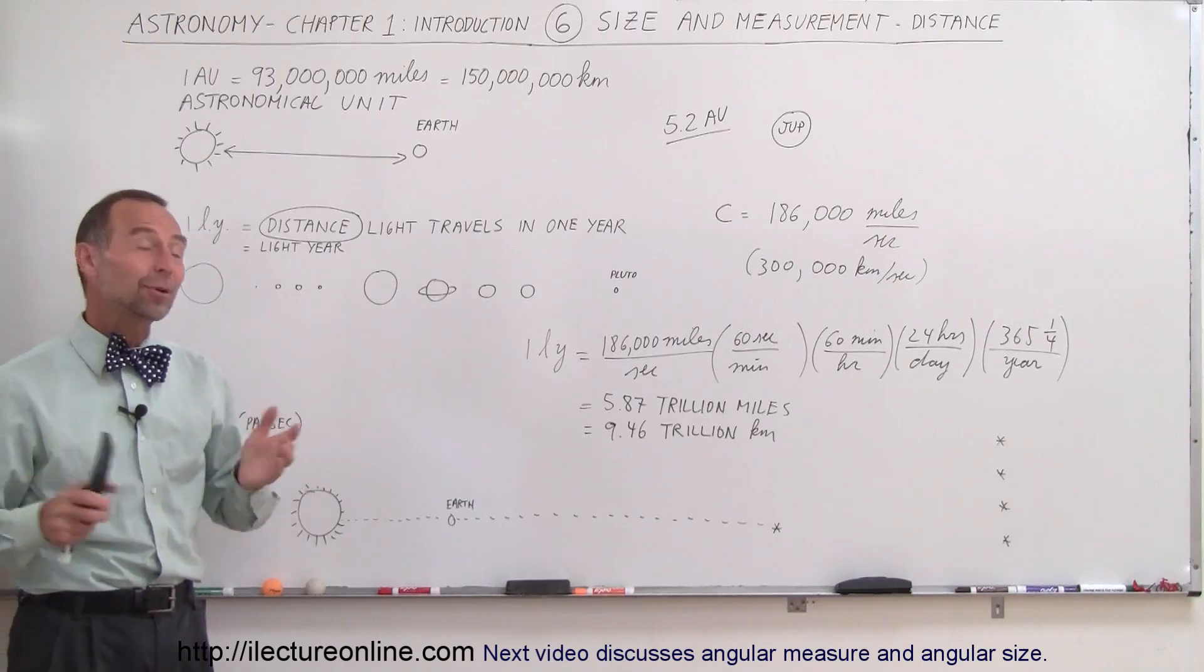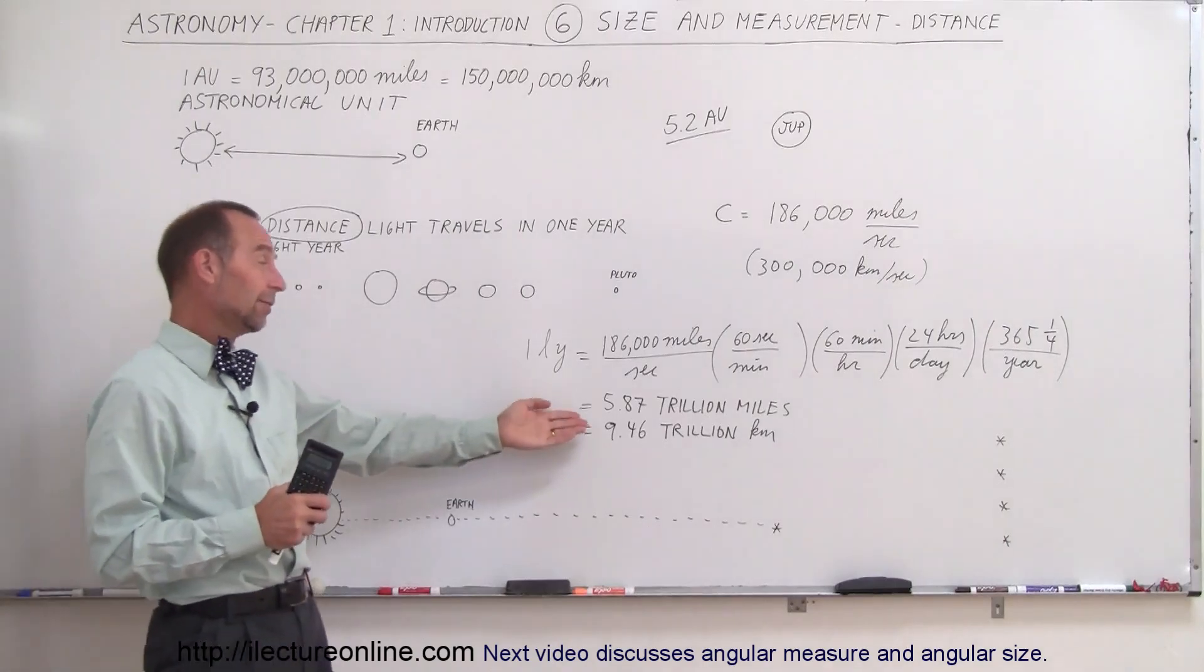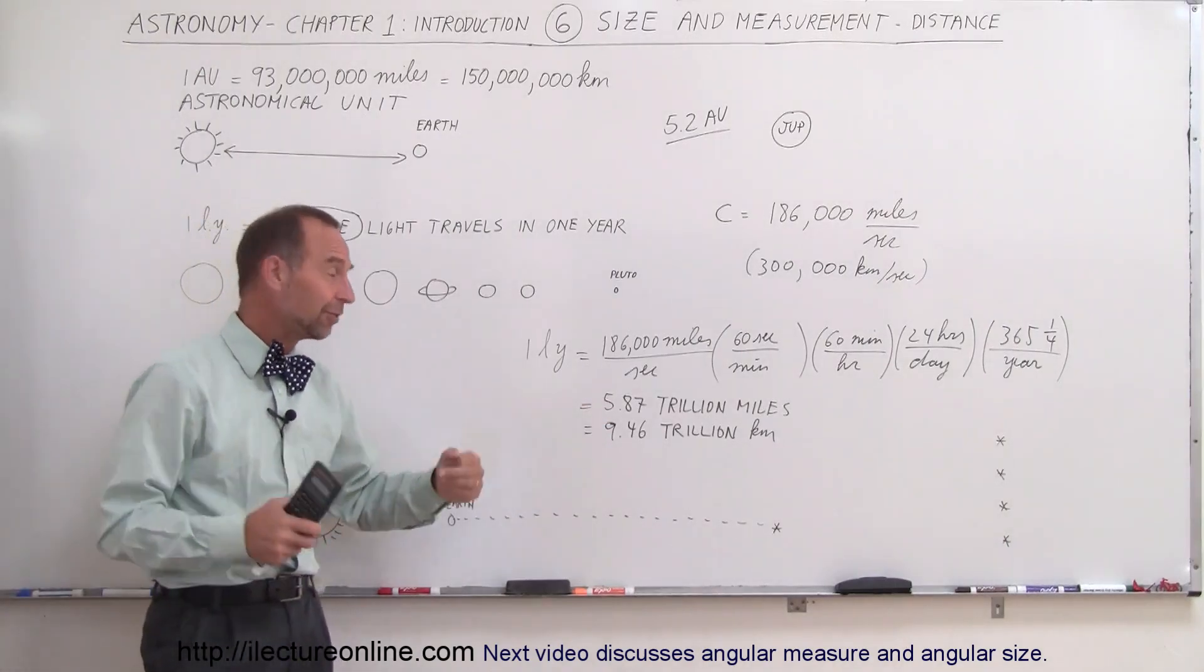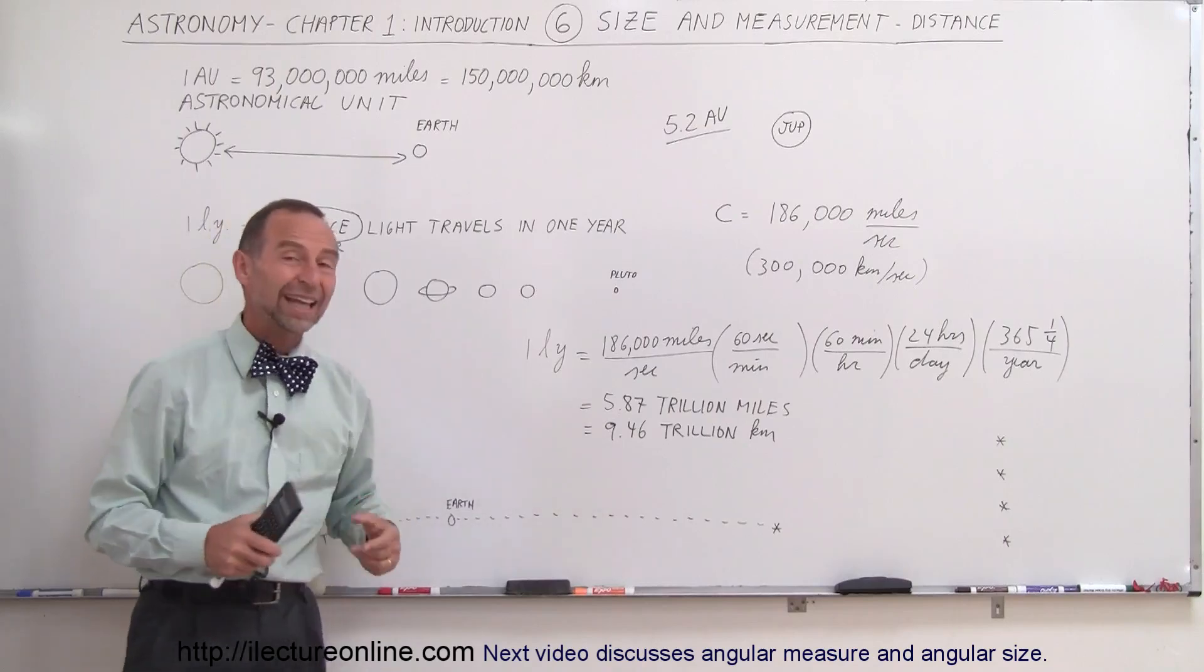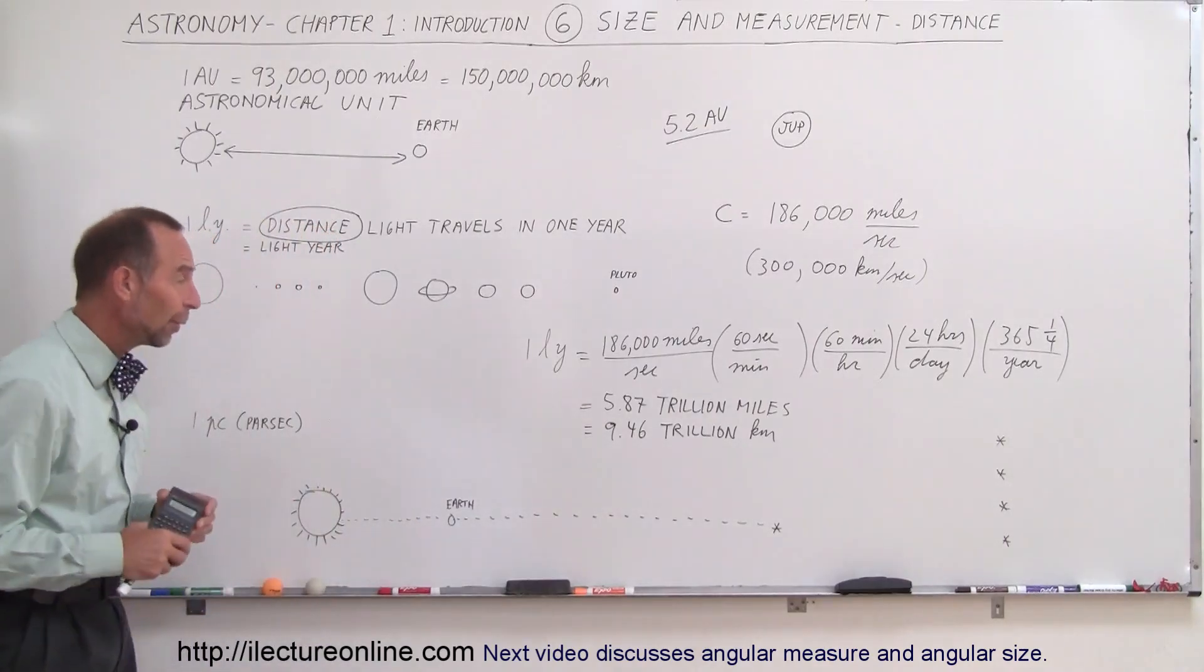At least, I think you have a pretty good idea. If you want to round it off, it's 6 trillion miles, roughly, for a light year or almost 10 trillion kilometers. That's probably an easy way to remember it.